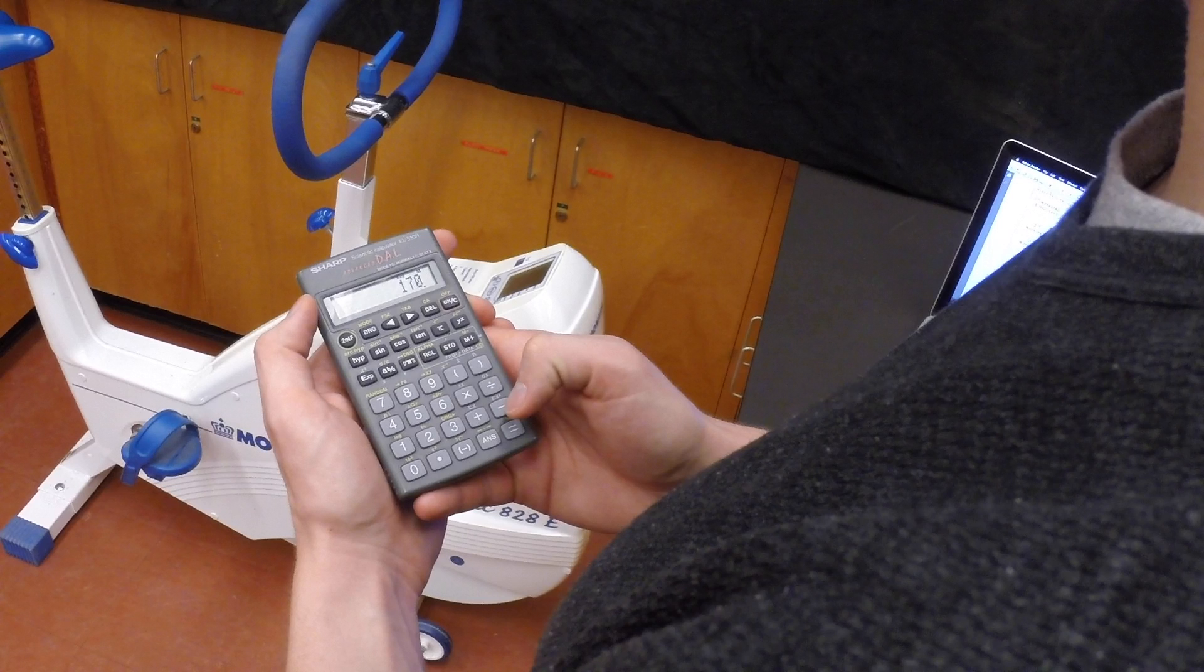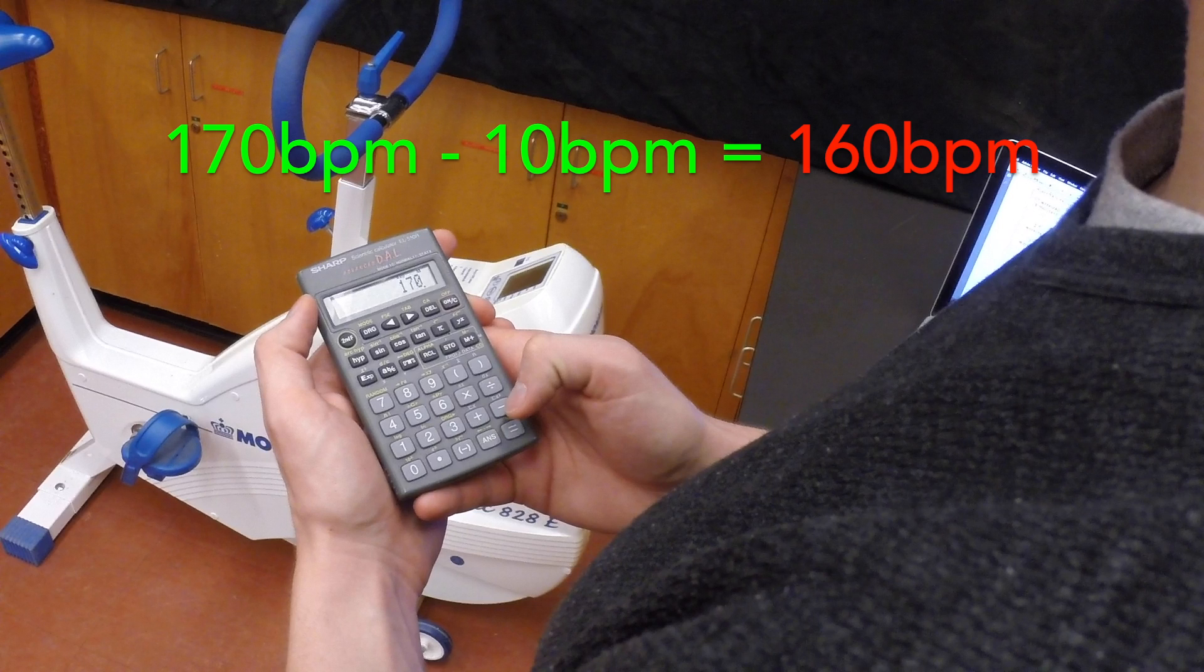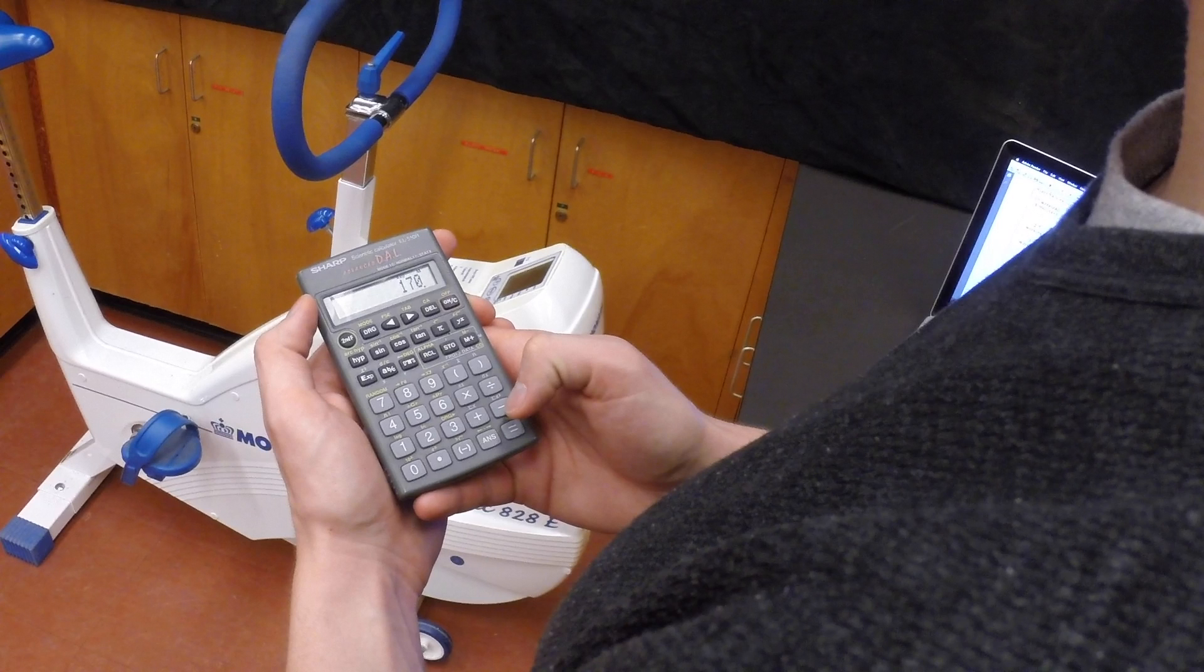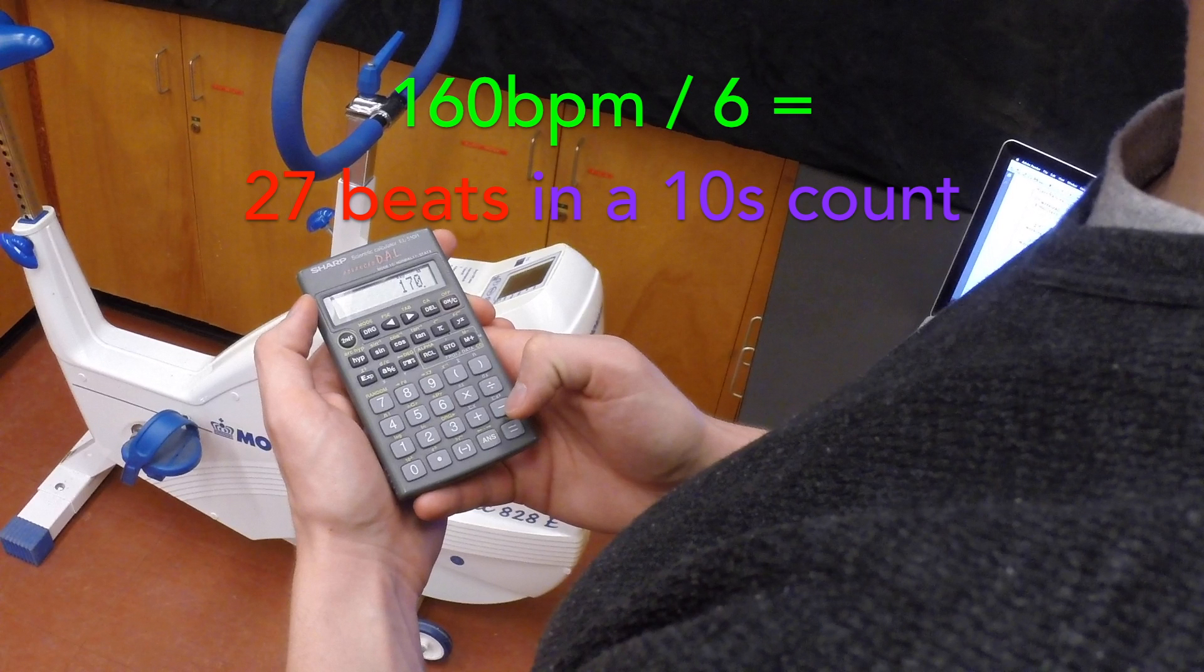Now the test is terminated when they come within 10 beats of that 85% heart rate max, so we subtract 10 beats, making the cutoff 160 beats per minute. To make the test run more smoothly, do the math so that you know what a 10 second count should have. In this case, 160 beats per minute is equal to 27 beats in a 10 second count.